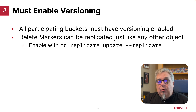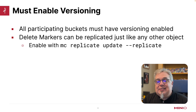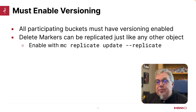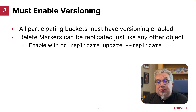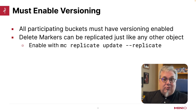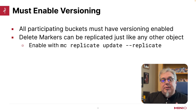In order to enable replication, your bucket has to have versioning enabled. If I'm doing bucket replication, I need to make sure that I've enabled versioning on the bucket. If I'm doing site replication, bucket versioning becomes the default, so there's no way to create a bucket that doesn't have versioning anyway. But that's only for site replication.